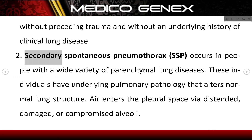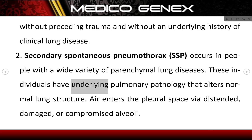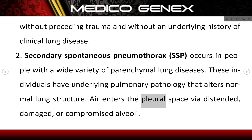Secondary spontaneous pneumothorax occurs in people with a wide variety of parenchymal lung diseases. These individuals have underlying pulmonary pathology that alters normal lung structure. Air enters the pleural space via distended, damaged, or compromised alveoli.